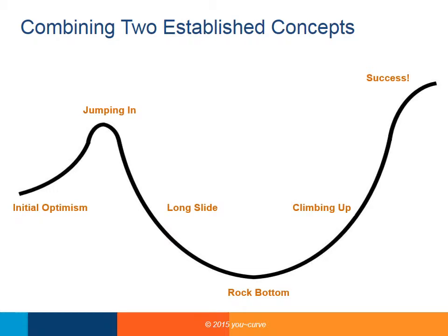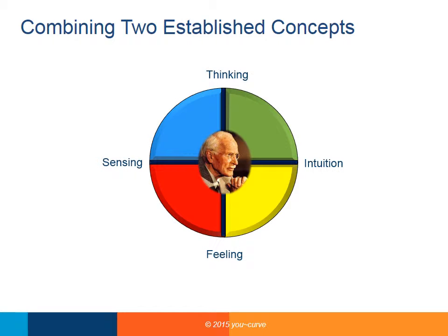U-Curve combines two concepts into one system that's practical and proven. The first is that the journey of change is a process — we divide this into six distinct stages, and people need different coaching at each of these stages. The second concept is using behavioral assessment tools to determine a person's individual motivations and needs. Most are based on the work of Kyle Young, using a four-quadrant approach. People with different behavioral styles need to be coached in different ways.